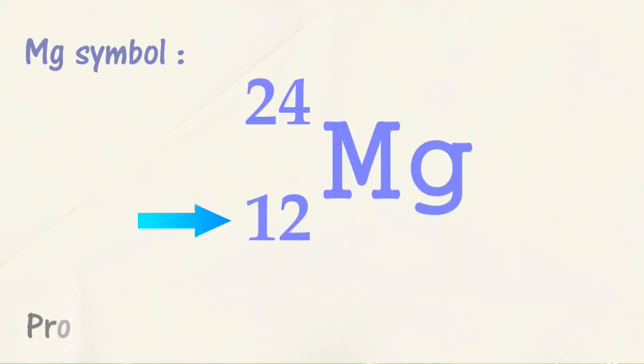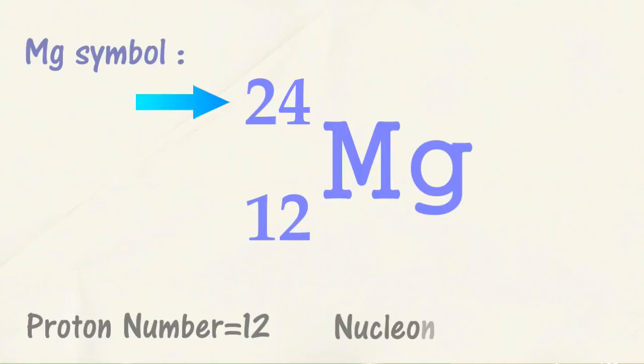Here is an example of the symbol for the element magnesium. The proton number of magnesium is 12, thus a magnesium atom has 12 protons. The nucleon number of magnesium is 24, thus a magnesium atom has 12 protons and 12 neutrons.